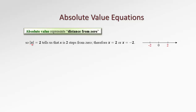Therefore, the equation absolute value of x equals 2 tells us that x is two steps apart from zero, which means x could be either 2 or negative 2. As on the diagram, a number that is positioned two steps from zero, either to the right or to the left, is either 2 or negative 2. So we just solved the first simple equation with absolute value by interpreting it geometrically on the number line.